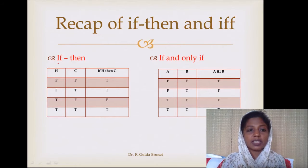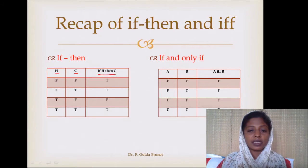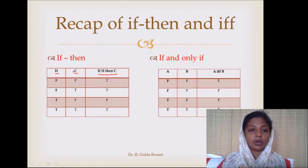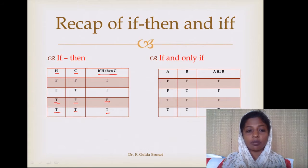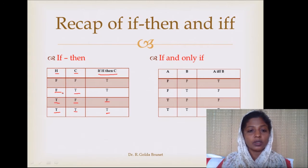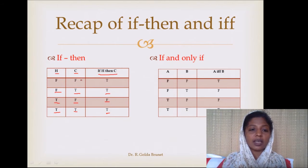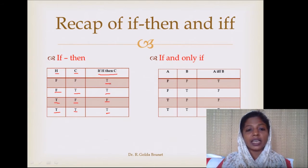Before proving the statements, let us understand if-then and if-and-only-if. In if-then, we have a hypothesis and a conclusion, and the entire statement 'if hypothesis then conclusion' will be true when hypothesis is true and the conclusion is also true. If hypothesis is true but the conclusion is false, then the entire statement is false. If hypothesis is false, the entire statement is true regardless of the conclusion.